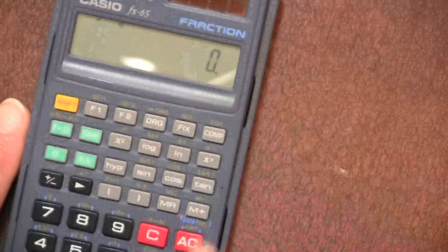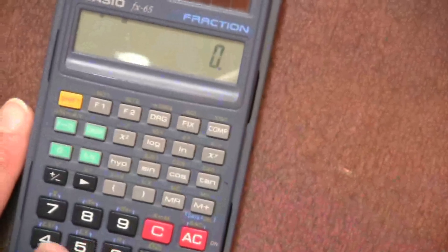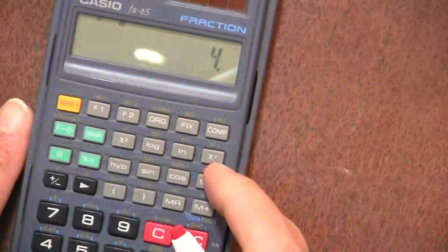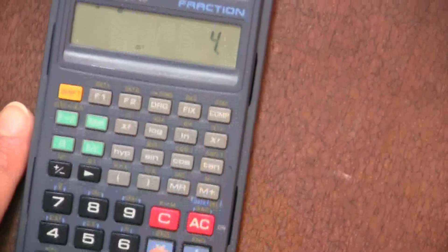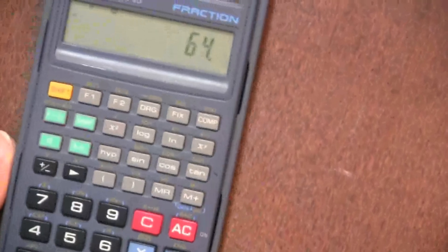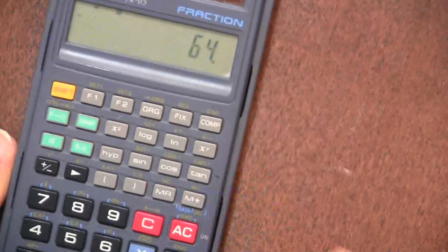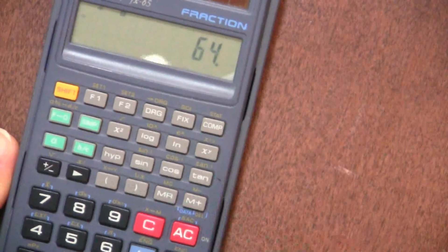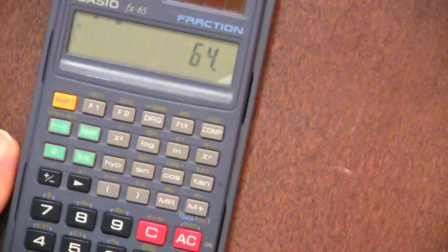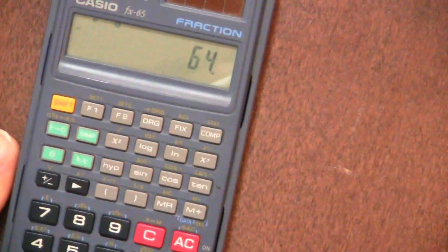But what if I want to know what is 4 cubed? Well, this x to the y button, I press that, and then I put in 3 for cubing, and there it is. 4 times 4 is 16 times 4, that's the cubing, gives me 64. So that is a handy tool as well.